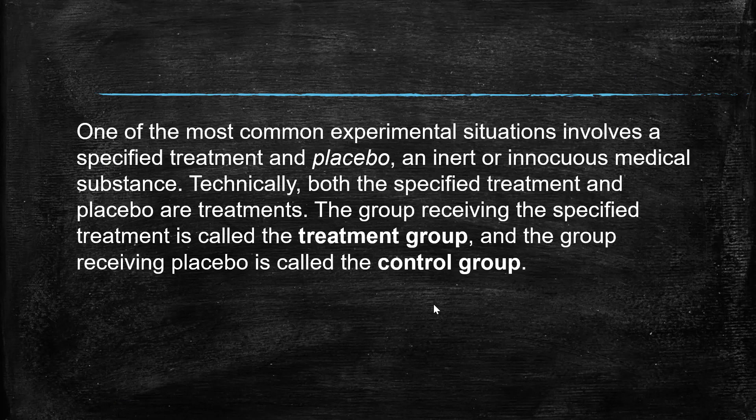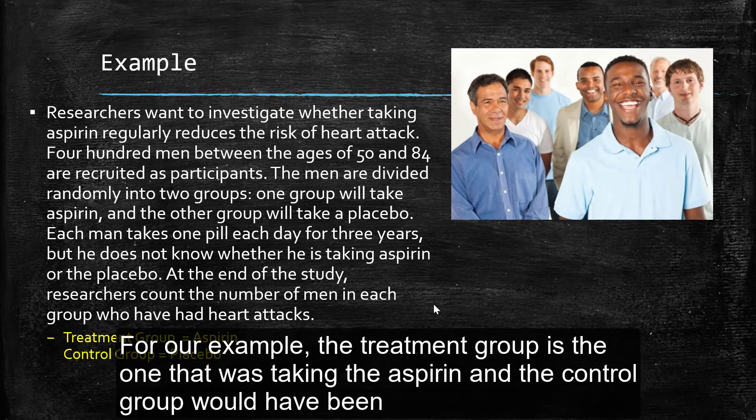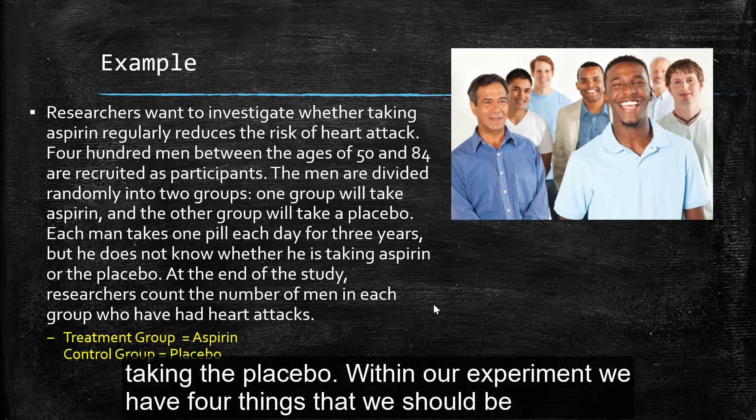Now, a lot of times with our experiments, what we have is our control group. And sometimes we call them the placebo group. So a placebo is just an inert or innocuous medical substance. And that's usually done, for example, with the aspirin and placebo idea. So for our example, our treatment group would have been the group that was taking the aspirin and the control group would have been those that were taking the placebo.